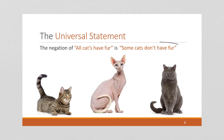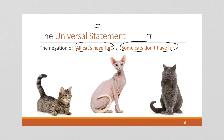Remember, each statement is either true or false. If the negation is false, then that must mean the original statement is true, and vice versa — there are only the two choices. So here are some pictures — I love this one of a hairless cat. You could argue it still technically has hair since it is a mammal with hair on its tail and whiskers, but for the purposes of this example, I think it works.